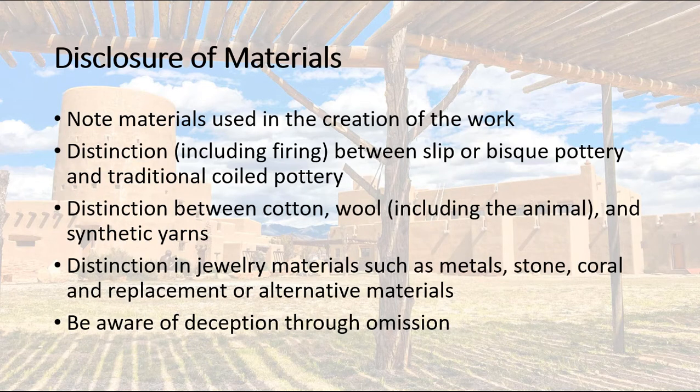We also think it's important to disclose the materials used. We ask that people note the materials used in the creation of the work. For example, there's a distinction — including the firing process — between slip or bisque pottery and traditional coiled pottery, and whether it's been kiln fired, pit fired, or traditionally fired. In rugs or textiles, there's a distinction between cotton and wool, including the kind of wool being used, and whether it's synthetic yarn, right down to whether it's hand-spun, multi-ply, or machine-applied yarns used in weaving.